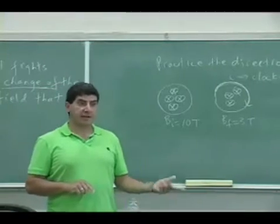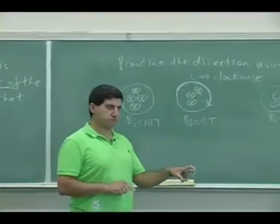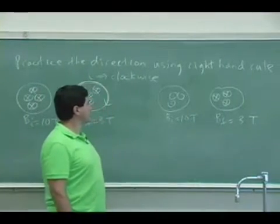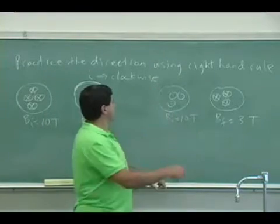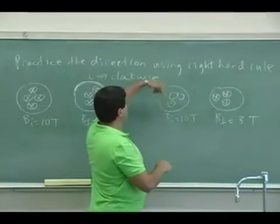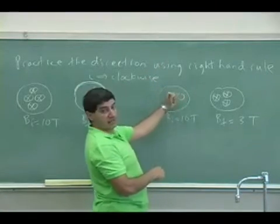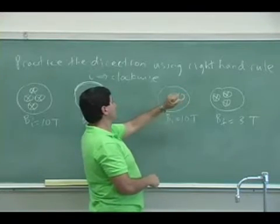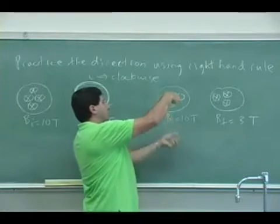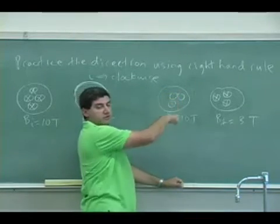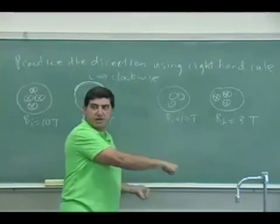This time, not only did it change magnitude but it changed direction, right? Somebody had, maybe from the other side, somebody had a magnet, the north side facing towards you and then they took it out. They took it out and then somebody else brought a magnet in from this direction. So, somebody took out the north pole and then the other side, the north pole came in.